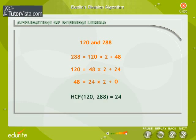So the HCF of 120 and 288 is 24. This method of finding the HCF of 2 positive integers is called Euclid's Division Algorithm.